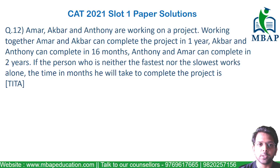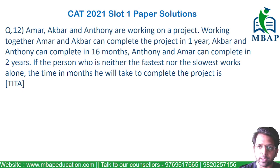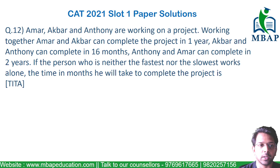Moving on to the next question. Read the question well. The question says: Ammar, Akbar, and Anthony are working on a project. Working together, the first two — Ammar and Akbar — can complete the project in one year, which is 12 months. Akbar and Anthony can complete the work in 16 months. And Anthony and Ammar can complete the same work in two years.